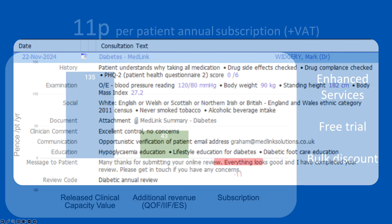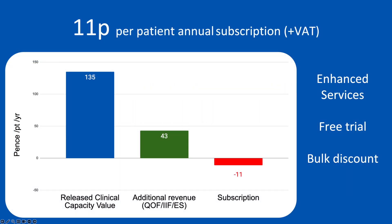Get the full Medlink package for only 11p per patient annual subscription. Release clinical capacity through online reviews. Release admin capacity as no more manual searches or campaigns are needed. Generate revenue with integrated enhanced services such as weight management.